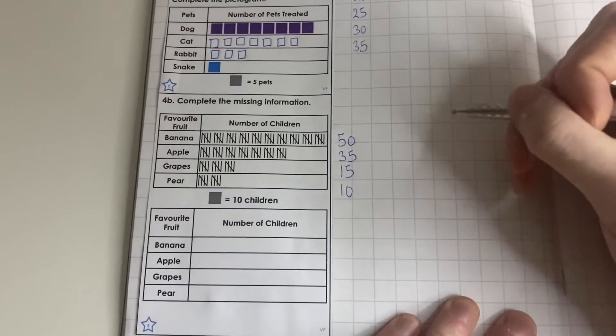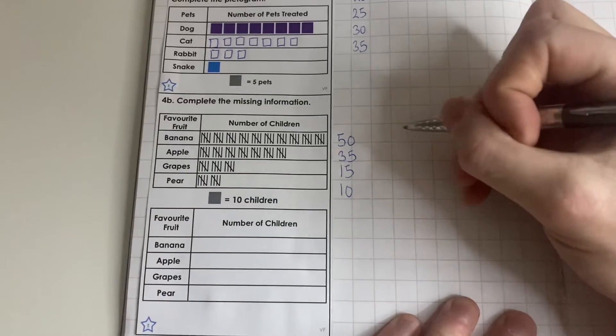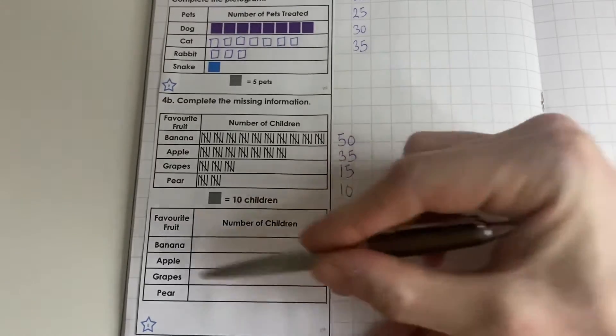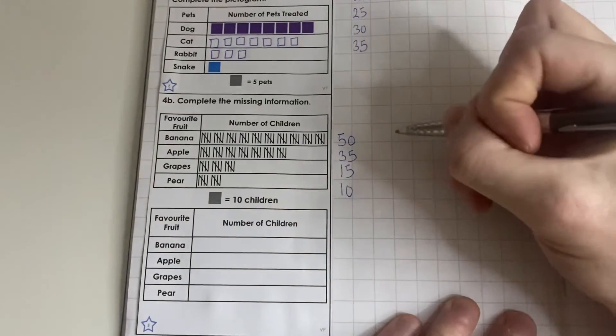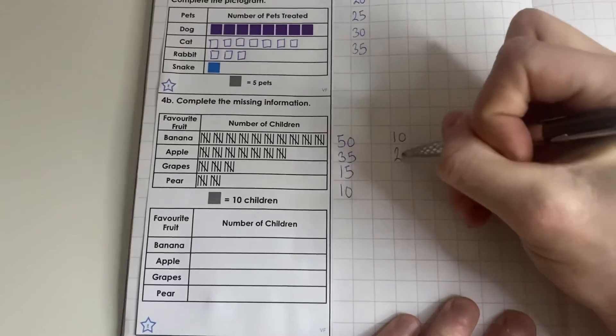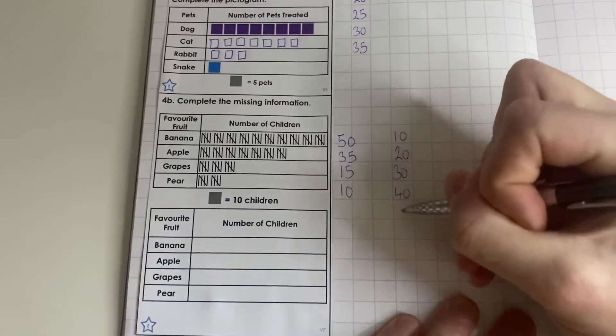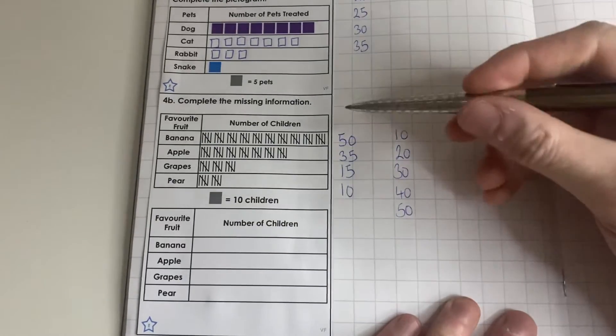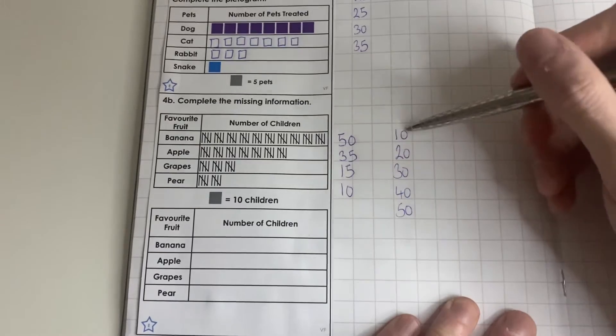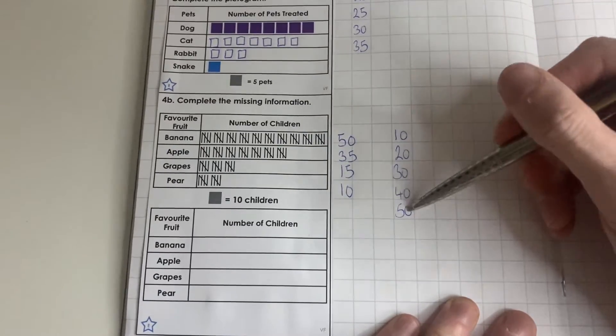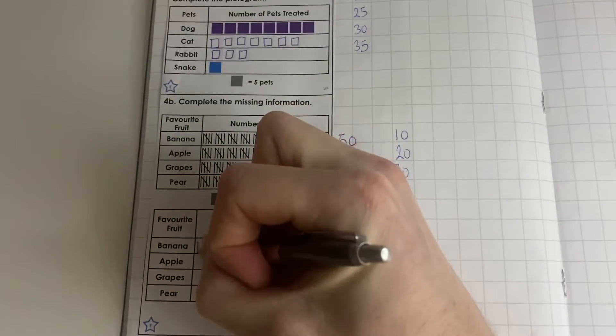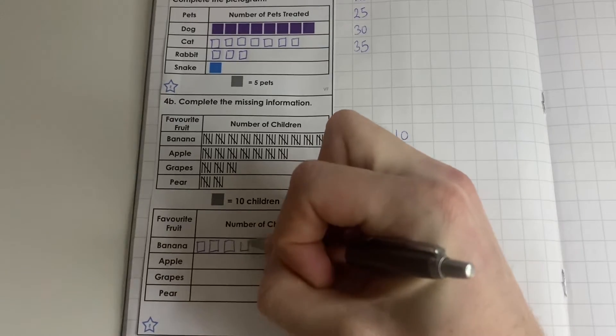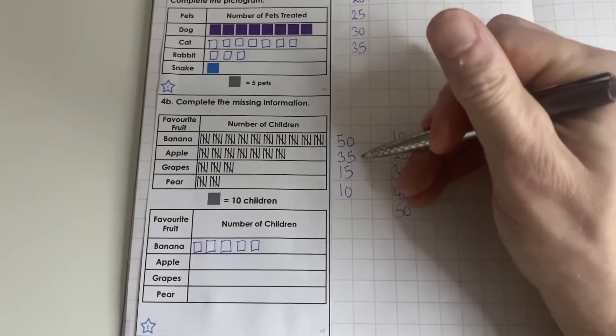I'm also going to write our ten times table out because this is going to help us identify how many squares we need for each fruit. We've got 10, 20, 30, 40, and 50. We're only going to go up to 50 because 50 is our highest number. We'll do the bananas first: 50, so we've got 1, 2, 3, 4, 5. We need to draw 5 squares for banana.